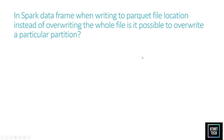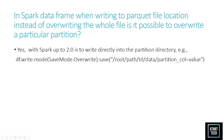In Spark, if you are writing data to a Parquet file and you want to override a particular partition — is it possible? Yes, it is possible. You can override a particular partition using save mode. Using dataframe.write.mode with the override save mode, you can override and provide the specific partition. In previous versions of Spark this was not possible, but in later versions it is.